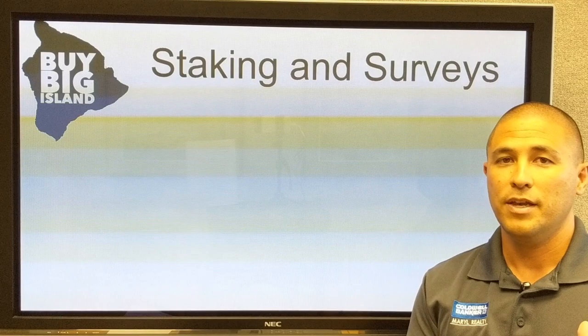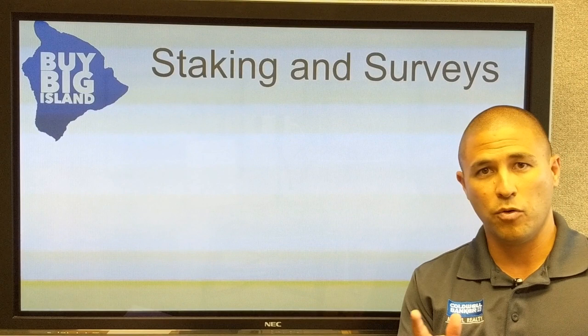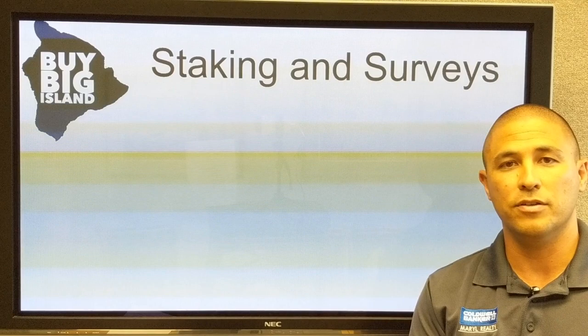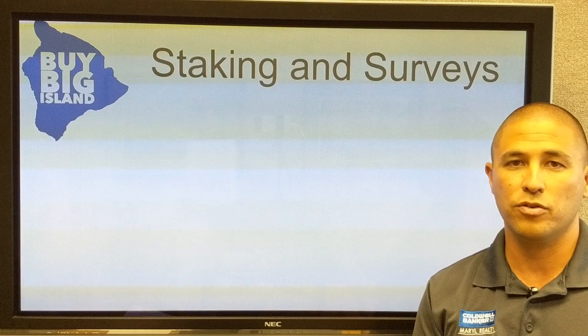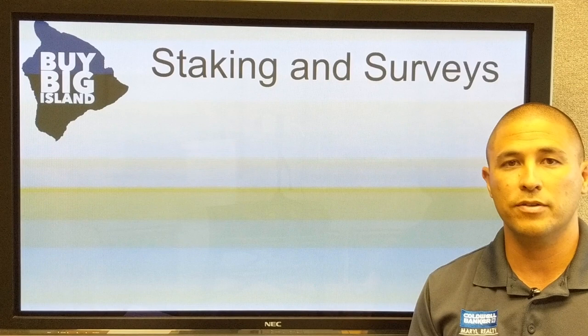Staking and surveys are very different. Stakings are pretty simple — they just identify the corners. A staking is often used on vacant land because there are no structures. For example, if there are three vacant lots in a row and you're buying the one in the middle, with no structures, no fences, or anything like that, a staking makes sense because you can just identify the corners and you're good to go.